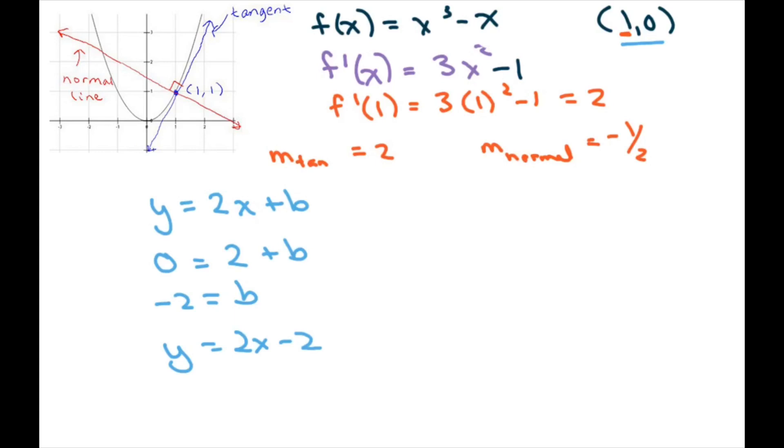Now for this one we do the same thing. Y equals negative one half x plus b. So zero equals one half plus b when I plug in the one. So b is negative one half. So you get y equals negative one half x minus one half.